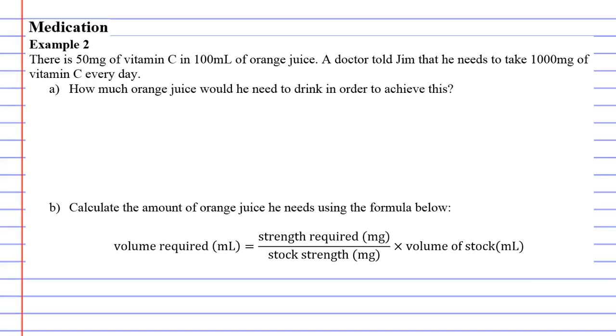Medication example 2: There is 50 milligrams of vitamin C in 100 milliliters of orange juice. A doctor told Jim that he needs to take 1000 milligrams of vitamin C every day. Question A: How much orange juice would he need to drink in order to achieve this?